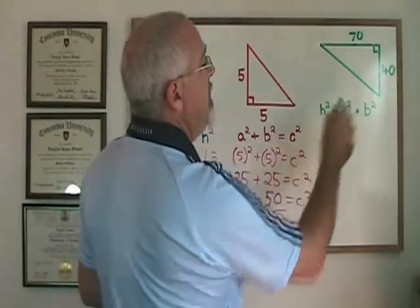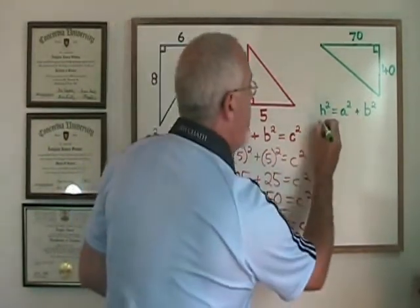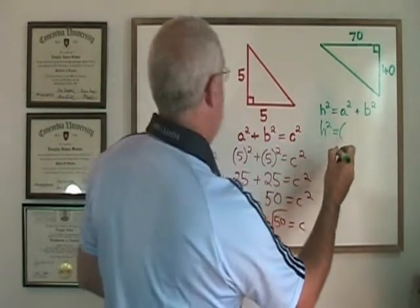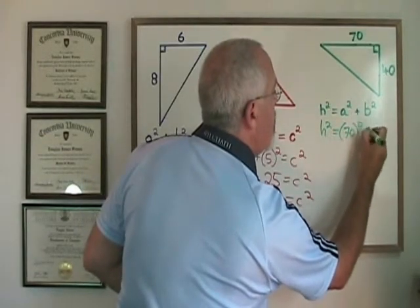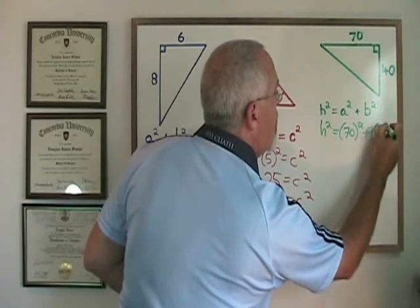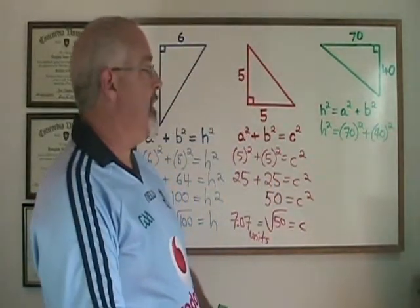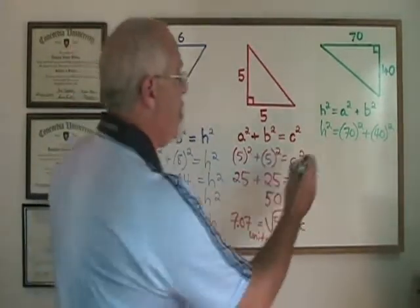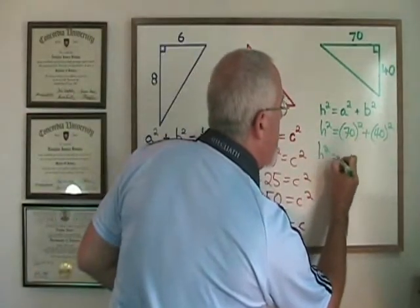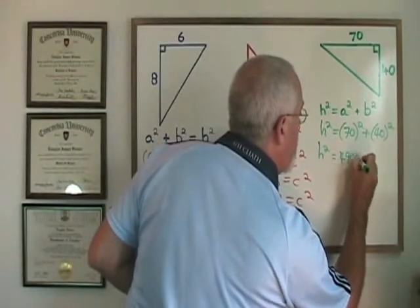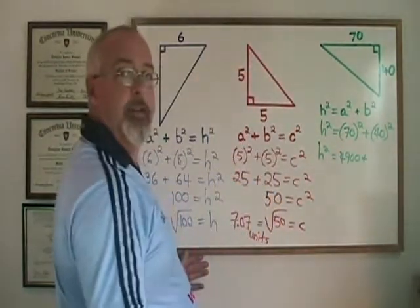Replacing my a and my b with 70 and 40, I get h² = 70² + 40². 70 squared is 4,900 and 40 squared is 1,600.